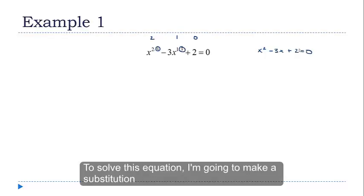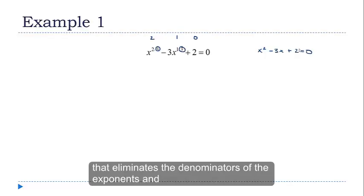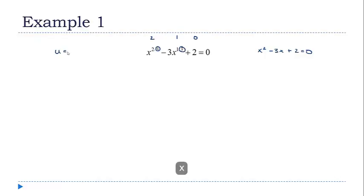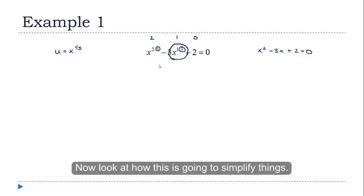To solve this equation, I'm going to make a substitution that eliminates the denominators of the exponents and at the same time leaves me with a quadratic equation. To do that, I'm going to start by defining a new variable u, which I'm going to define to be equal to x to the 1 third. And this is based on the middle term here in the original equation.